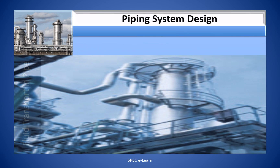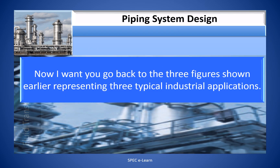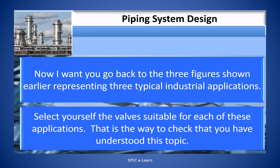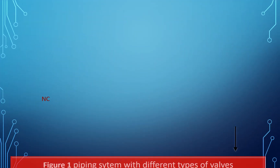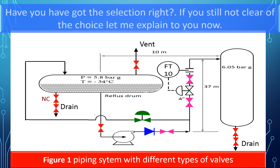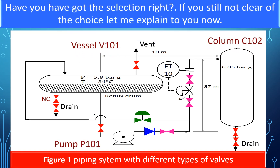Now, go back to the three figures shown earlier representing three typical industrial applications and select the valves suitable for each application. That is the way to check that you have understood this topic. Have you got the selection right? If you are still not clear on the choice, let me explain.